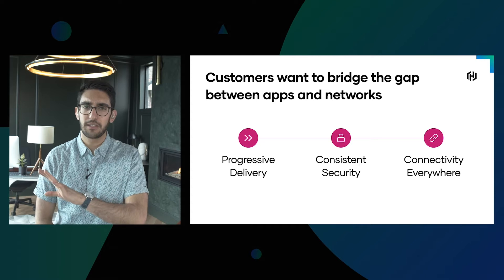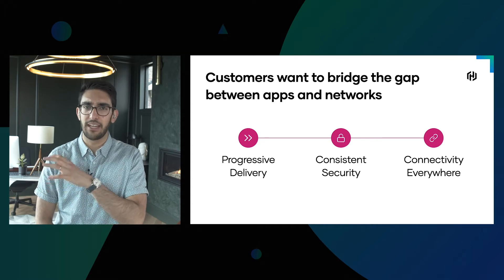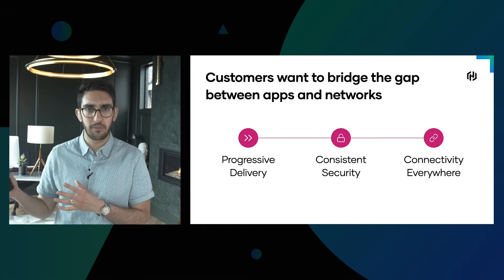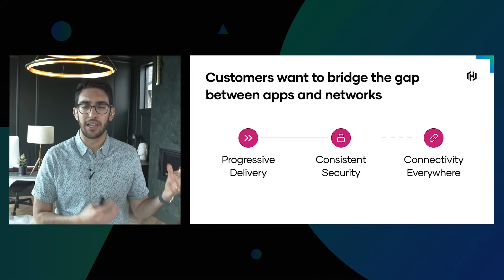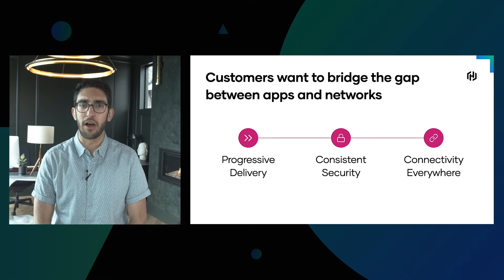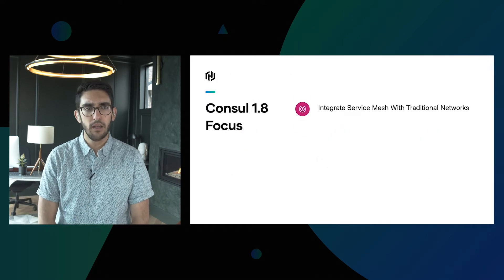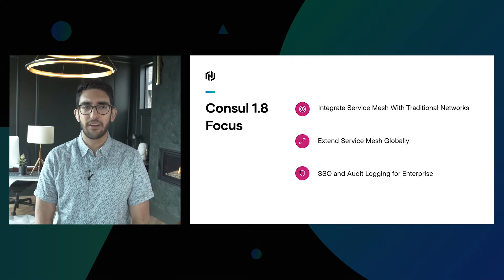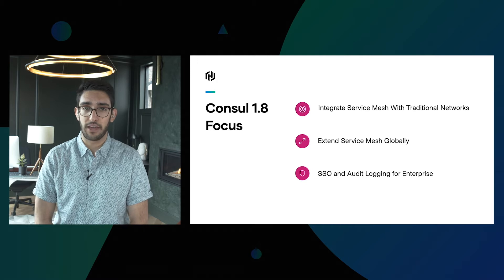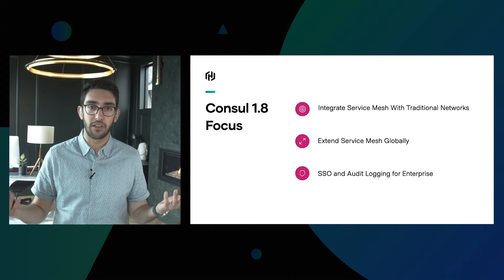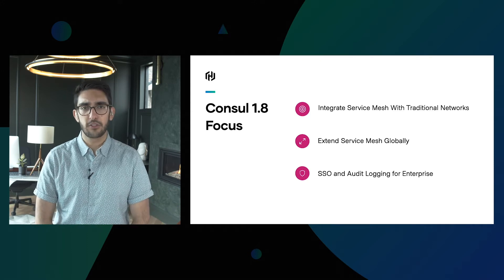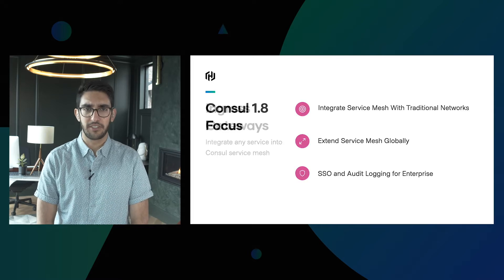The last piece is how do we have connectivity everywhere? It's great that we're going to have this modern service mesh construct for our newer applications, but how does that integrate with our traditional and legacy applications that can't participate in this more modern approach? With Consul 1.8, we had three major focus areas: integration of the service mesh with traditional networks, extending the service mesh globally across large data center footprints, and looking at what's needed in an enterprise setting with things like single sign-on and audit logging.